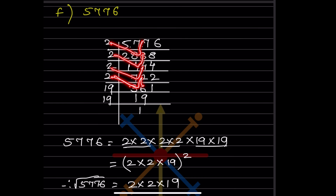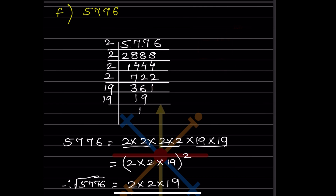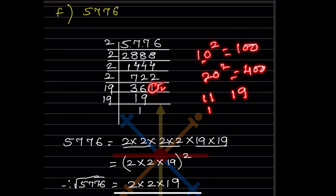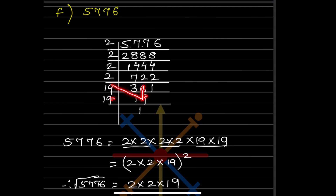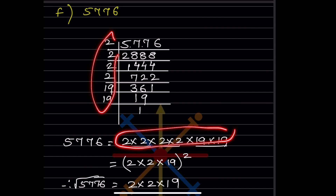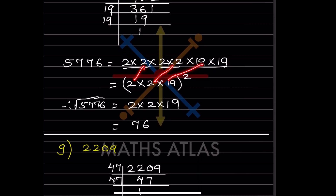For 361, it is not divisible by 2, 3, 4, or 5. For big numbers, you can start with 10: 10 squared is 100 and 20 squared is 400, so 361 lies between 10 and 20. The last digit is 1, so the square root is either 11 or 19. 11 × 11 is 121, but 19 × 19 is 361. So we take 19 × 19, pair it, write 19 once, put the square root sign, and the answer is 19. Wait — when you multiply, the result is 76? No — the square root of 361 is 19.